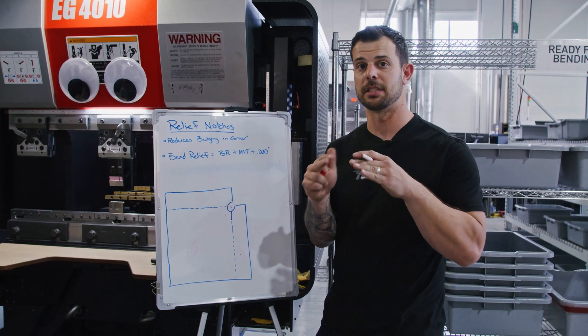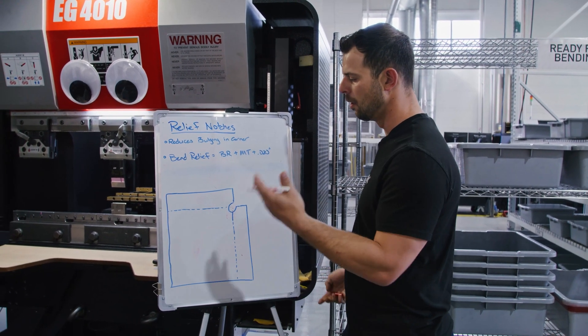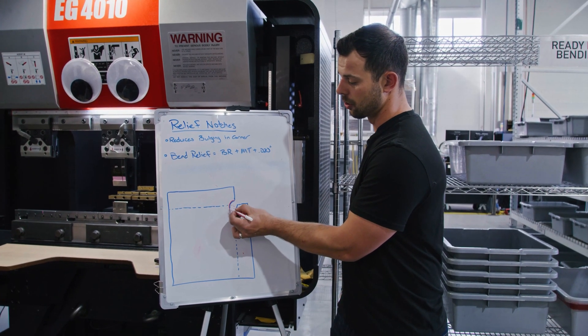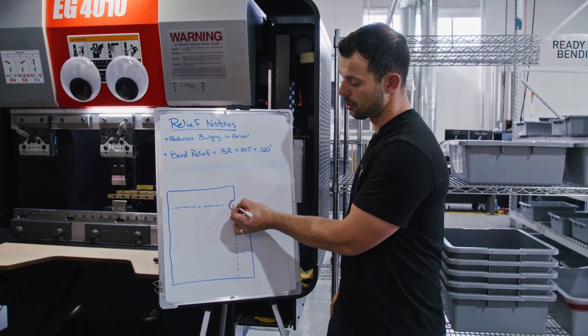And that's because as we're stretching that material, it's got to go somewhere and it ends up pushing it into a point. So one quick trick we can do is by putting in essentially a circle that is centered at that axis between the two bend lines.